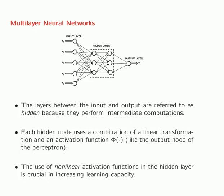Each hidden node uses a combination of a linear transformation and an activation function. This is very similar to what we saw in the output node of the perceptron, where we first applied a linear transformation and then followed it with the sign activation. An important point about multilayer neural networks is that the use of non-linearity in the activations is crucial in increasing the learning capacity of the network. In fact, we will show that if you use a multilayer neural network with only linear activations, it isn't any better than a single layer network.